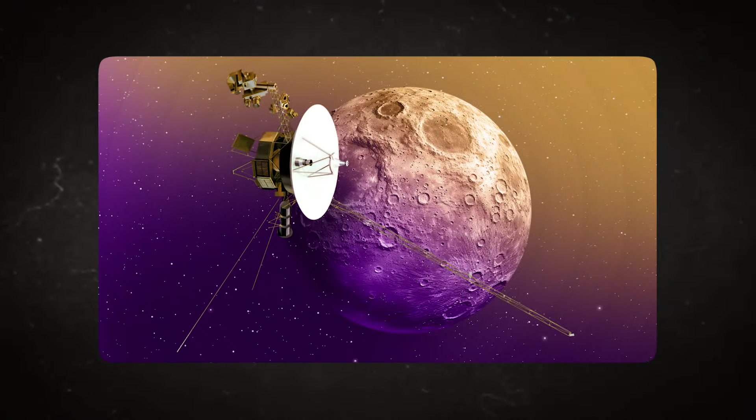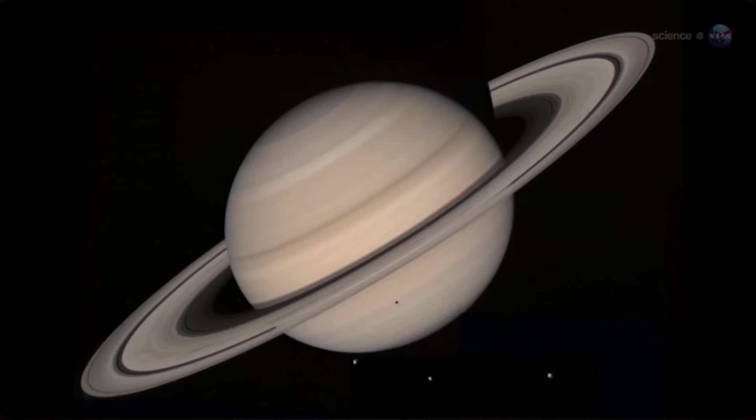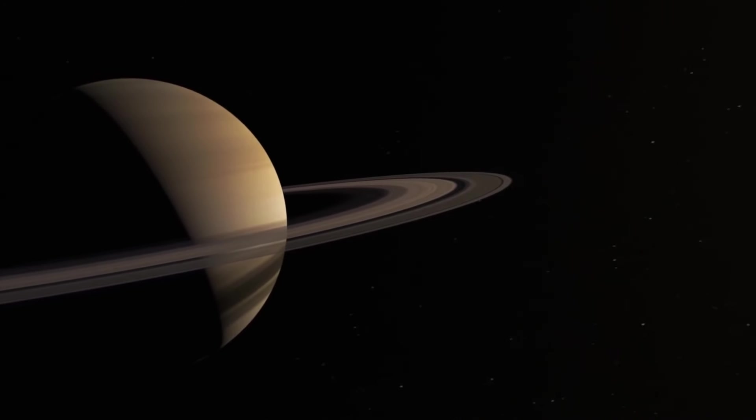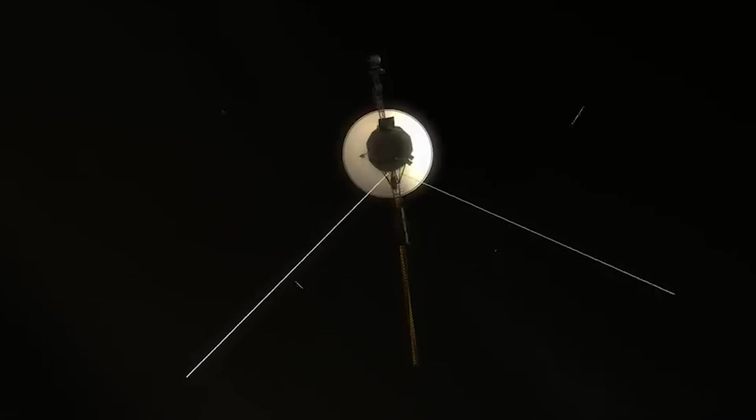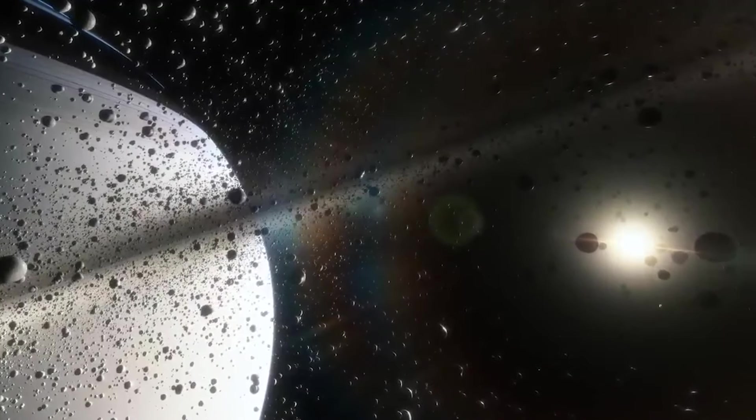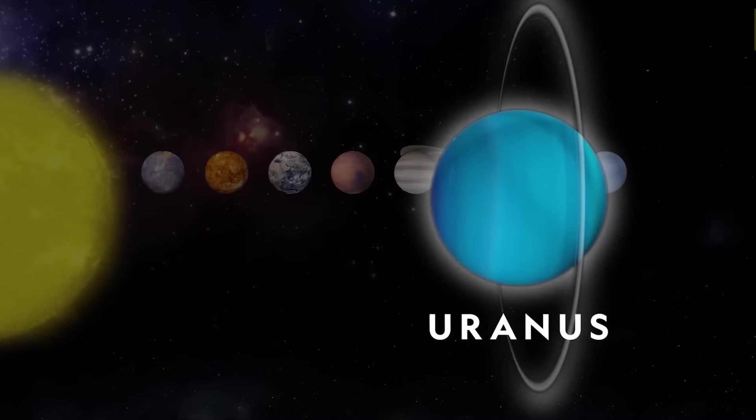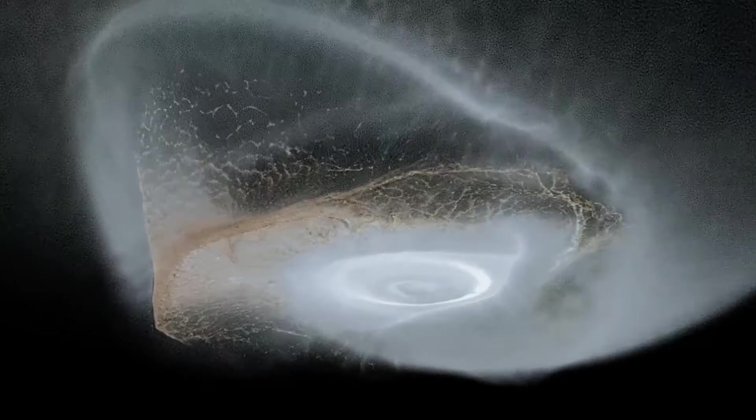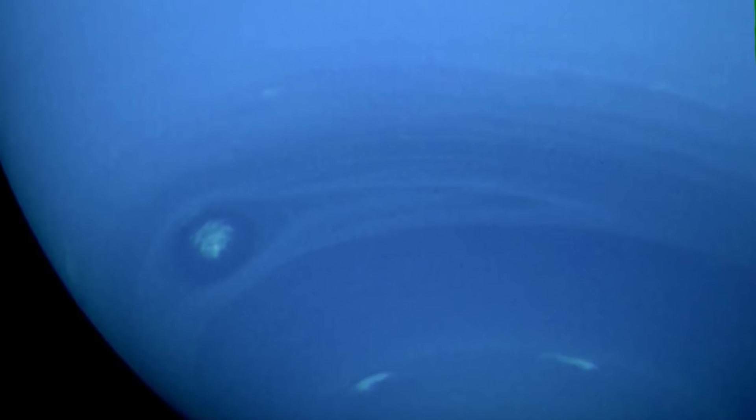On the other hand, Voyager 2 made its closest approach to Jupiter in July 1979, then continued to Saturn, conducting a flyby in August 1981. It provided additional observations of Saturn's rings, moons like Titan, and the planet's atmosphere, complementing Voyager 1's findings. It also examined Jupiter's atmosphere, capturing detailed images of cloud patterns and storms. In January 1986, it conducted the first close-up examination of Uranus, discovering new rings and previously unseen moons. It also studied Uranus's atmosphere, revealing its composition and temperature variations.